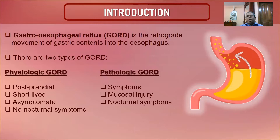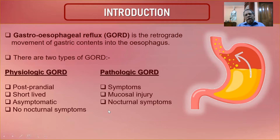Pathological GORD involves functional disturbance causing prolonged retention of food in the stomach. Mucosal injury occurs because of repeated acid exposure to the esophagus causing ulceration. The patient may wake up at night due to heartburn as acidic material enters the esophagus. Pathological GORD is differentiated mainly by the presence of nocturnal symptoms.